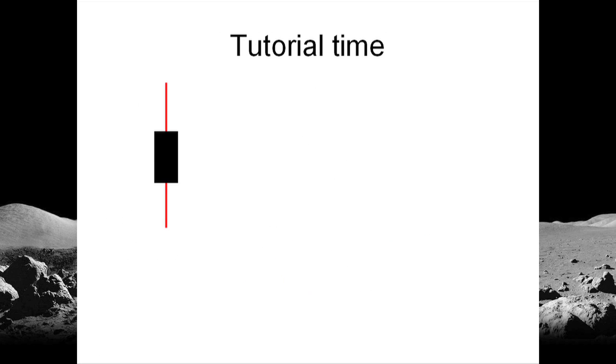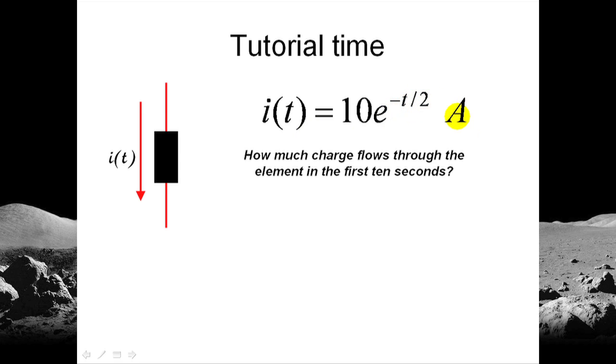Let's do an exercise. Tutorial time. We have an element there that we don't know what it is, but the current is given to us. That current is exponential: ten times the exponential of negative t in seconds divided by two amps. And the question is, how much charge flows through the element in the first ten seconds? That is from t equals zero to t equals ten.